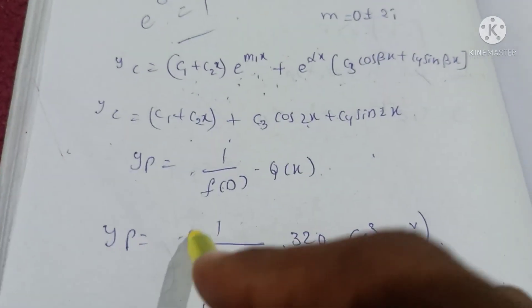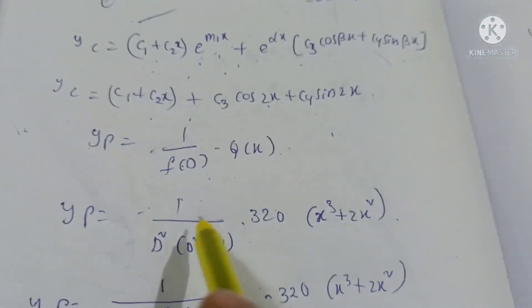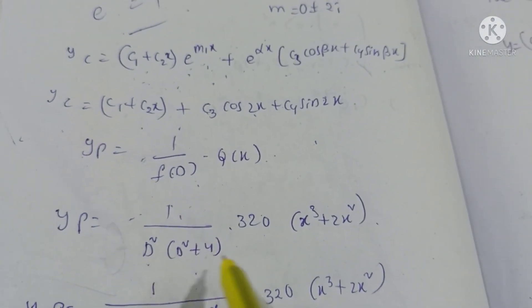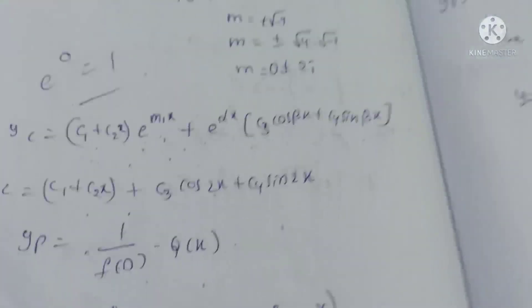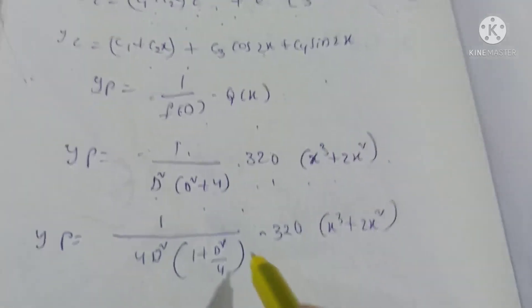The particular solution yp equals 1 divided by f(D) into Q(x), where f(D) equals D squared into D squared plus 4, and Q(x) equals x cubed plus 2x squared.